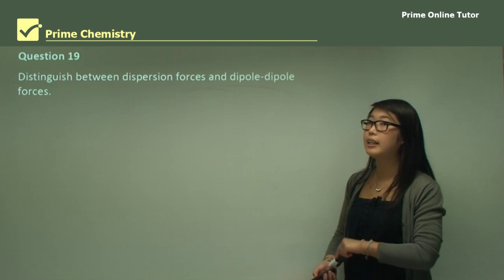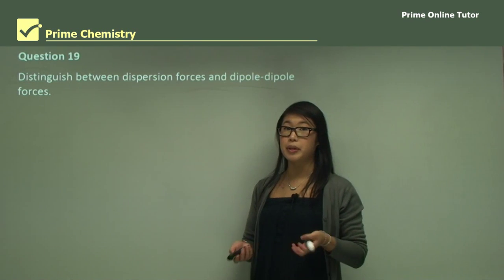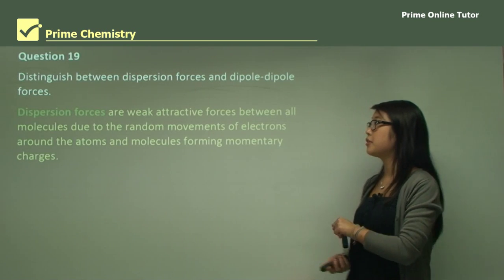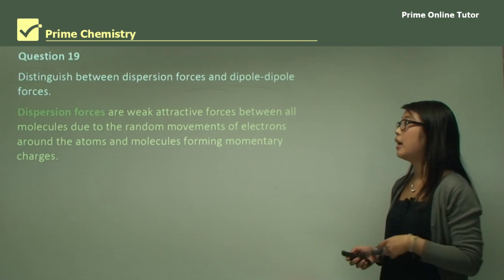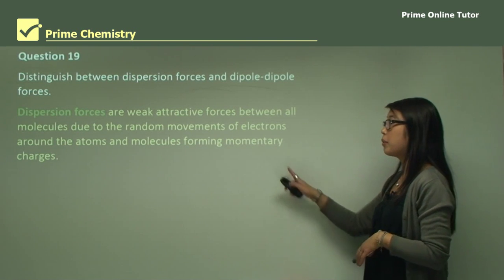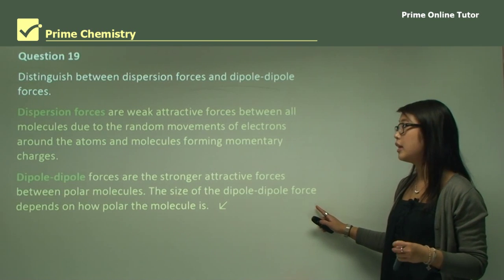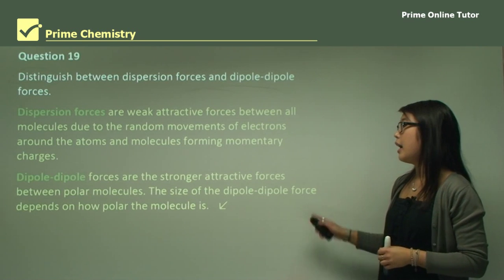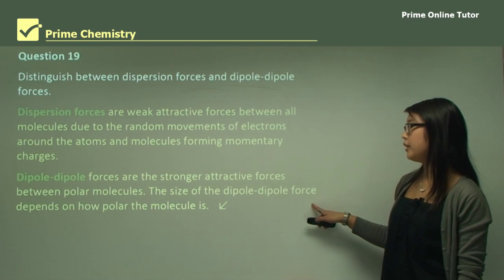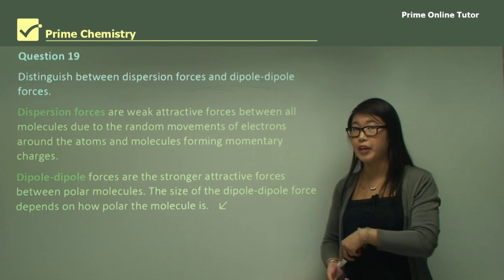Question 19 asks us to distinguish between dispersion forces and dipole-dipole forces. Dispersion forces are weak attractive forces between molecules due to random movements of electrons around the atom, forming momentary charges or slight polarity. However, dipole-dipole forces are stronger attractive forces between molecules, and they are not temporary — they are permanent over the molecule. The size of the dipole-dipole force depends on how polar the molecule is, which really relates to the electronegativity of the atoms involved.